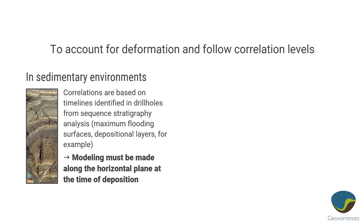We want to account for deformation and follow the spatial correlation where it leads. In sedimentary environments there's a natural geological interpretation: at the time of deposition we assume it was all horizontal, but over time the rock got deformed, giving us varying directions while still having a clear layered sense. So what we'd like to do is get back to a flat horizontal domain and work with that, where stationarity assumptions should be more realistic.